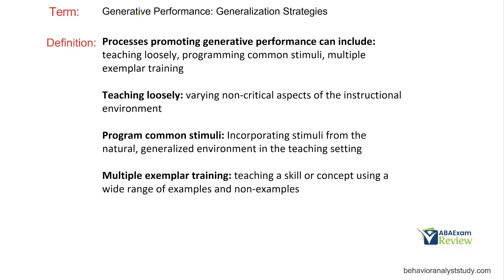Generative performance is a little simpler because we're really thinking about generalization strategies. Processes promoting generative performance include teaching loosely, programming common stimuli, and multiple exemplar training. If you're familiar with your generalization strategies, all three of these help generalize — that's essentially what generative performance is: getting novel responses to occur. Teaching loosely means varying non-critical aspects of the instructional environment. If one day I put out red dots for students to sit on and the next day blue dots, that is teaching loosely — the dot color is not critical, but we're avoiding non-critical stimuli developing stimulus control.